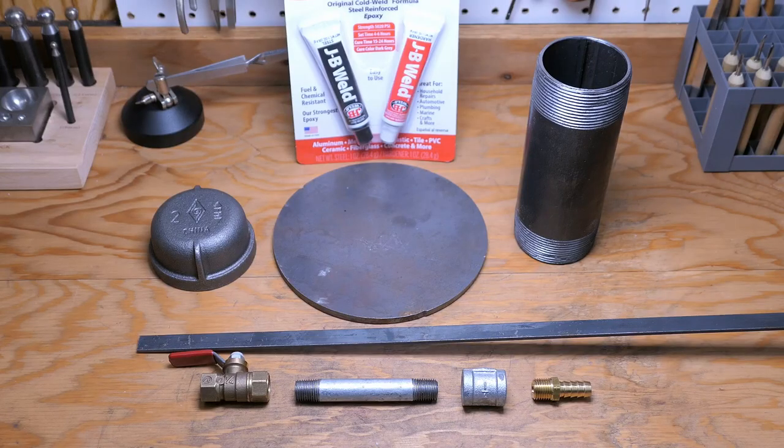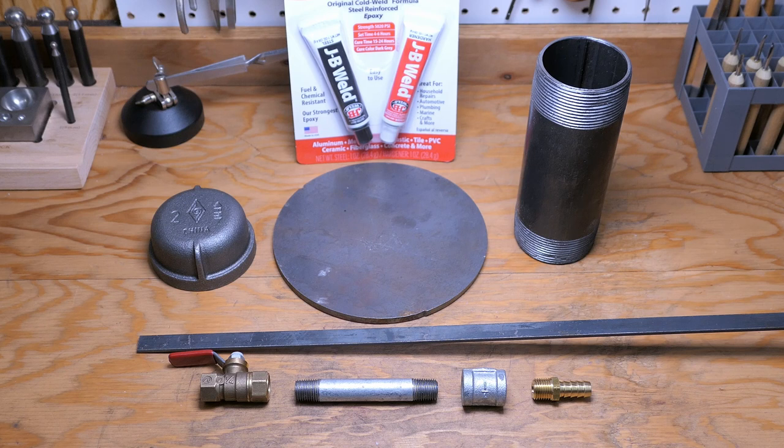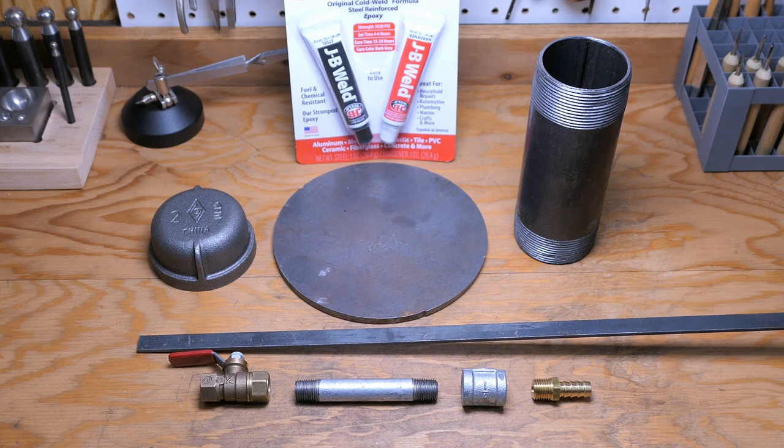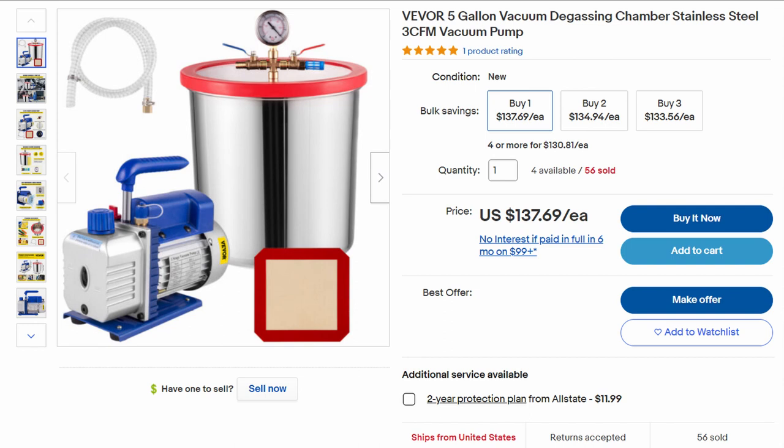And these are the main supplies that I'm using for this build, and I'll leave a full list of the tools and materials down in the description. The JB weld may not be needed, but more on that later. And for the vacuum pump itself, I'm actually going to be using the pump and hose setup that came with my 5 gallon vacuum chamber system.